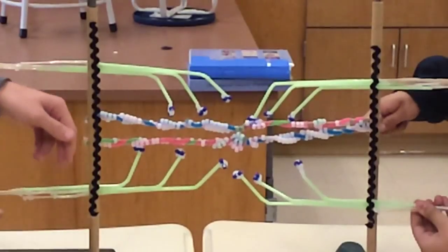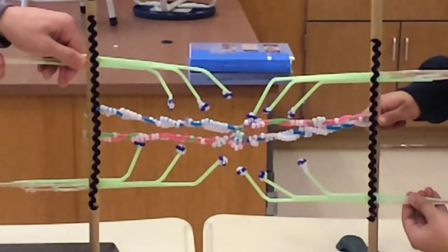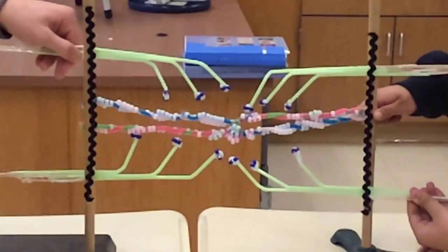Next, calcium ions diffuse from the sarcoplasmic reticulum and enter the fiber through the transverse tubules.